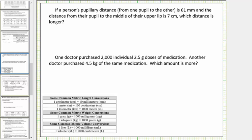Welcome to a lesson on comparing measurements given in metric units. In the first example, if a person's pupillary distance — which is the distance from one pupil to the other — is sixty-one millimeters, and the distance from their pupil to the middle of their upper lip is seven centimeters, which distance is longer?